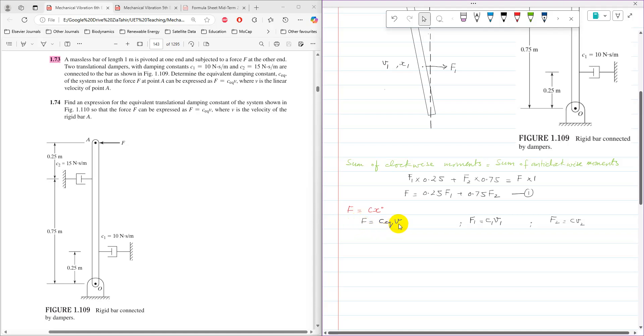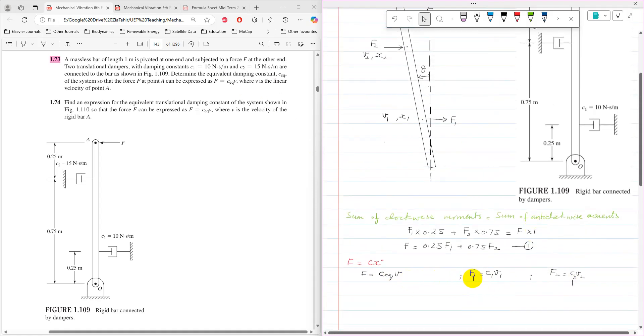F equals C_equivalent times V as given in the statement. F1 equals C1 times V1 where C1 is given as 10. F2 equals C2 times V2 where C2 is given as 15. Now we have the forces but we don't have these velocities.